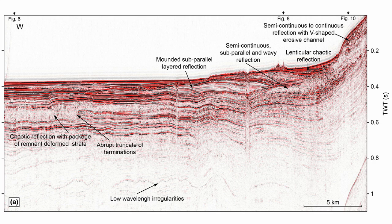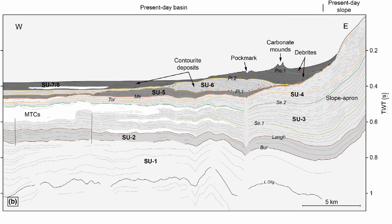Interpreting this seismic example, you can identify the slope apron — remember, this is the end of the slope of the Bahamas, which is extremely steep. These sediments are interpreted as a series of debris flows and mass transport complexes (MTCs). Around these you have contourite deposits — sediments moved by currents at the base of the isolated platform. Re-sedimentation is very important during low stands.